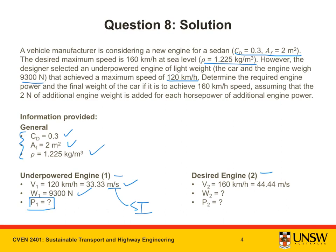For the desired engine, we know that we want it to achieve 160 kilometers per hour, which I've also converted to SI units. And we don't know what weight or what power is required. That's what we need to find out. We also know that there is a relationship between additional engine weight and additional engine power. We'll discuss that in the next slide.